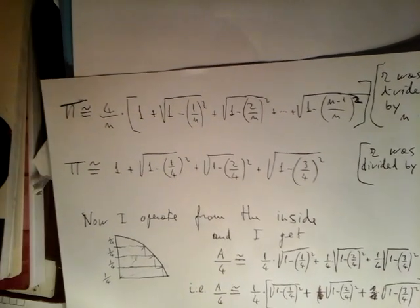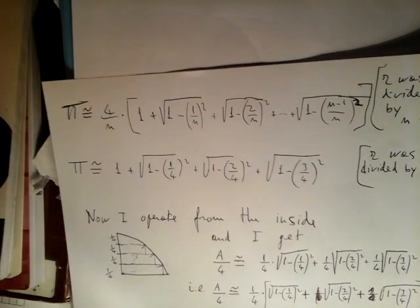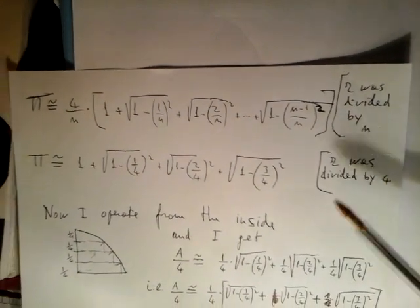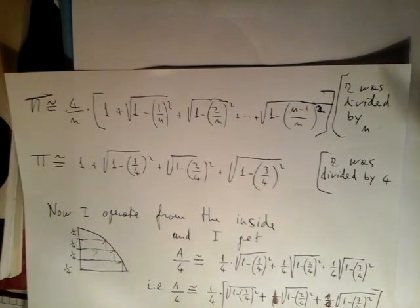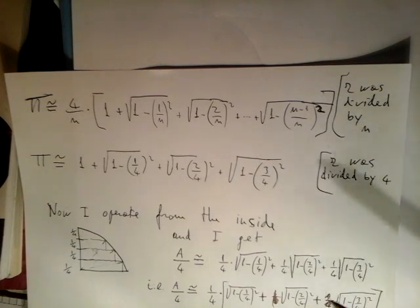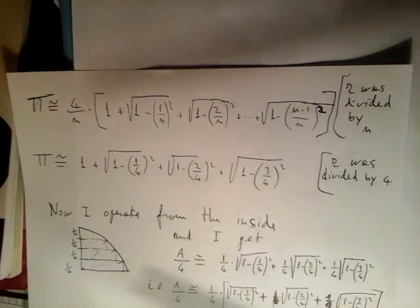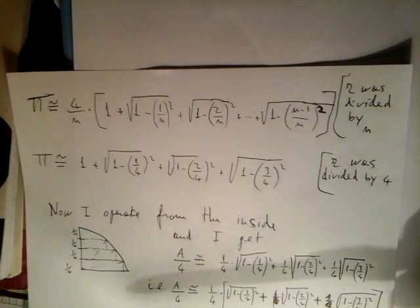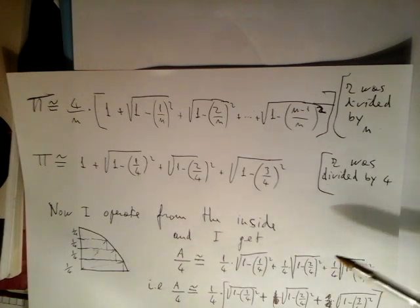These results were obtained, I remind you, from the outside — we obtained the area of the quarter of the circle operating from the outside. Here, instead, we operate from the inside. And doing so, we can see what we get.